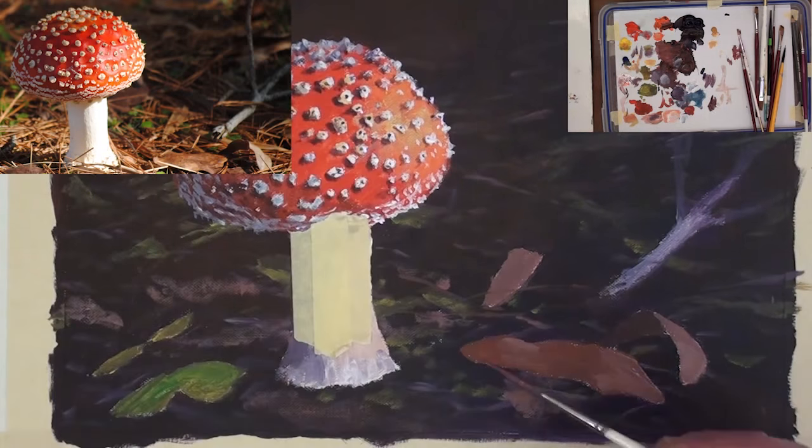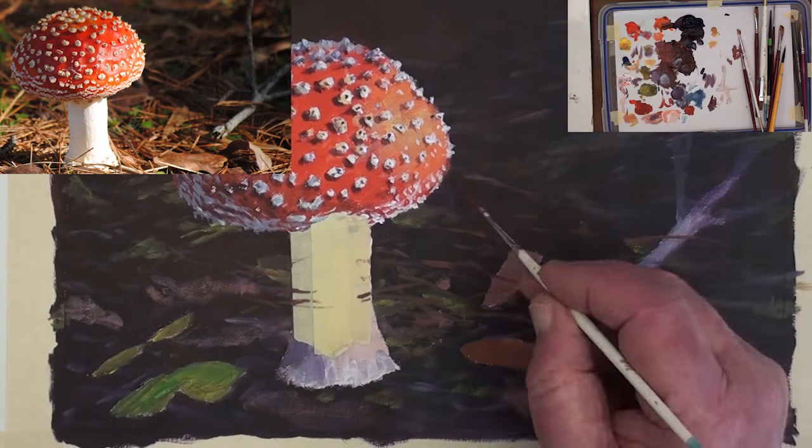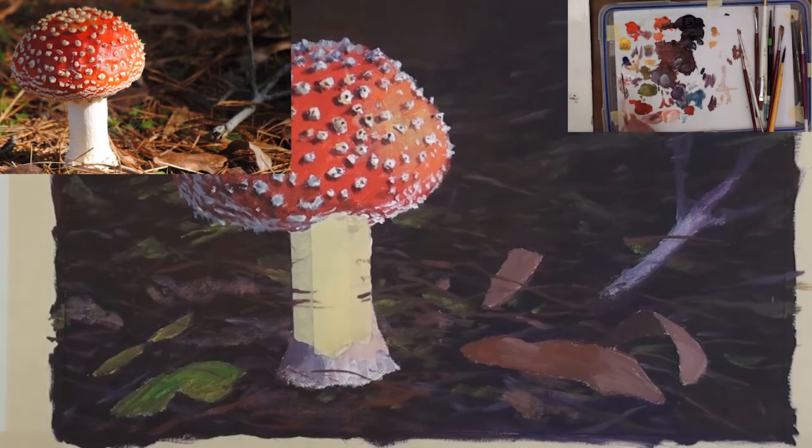Add masking fluid to cover the stem and with a rigger brush flick in all the small twigs lying on the ground. Bring some over the masking tape.